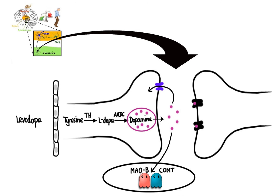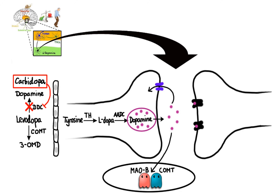One of the biggest problems levodopa faces on its own is peripheral metabolism. There are two major enzymes in the periphery that cause breakdown of levodopa before it can reach the brain: peripheral dopa-decarboxylase, which converts levodopa to dopamine, and catechol-O-methyltransferase (COMT), which converts levodopa to 3-O-methyldopa. Because of this, levodopa must be administered with carbidopa, which inhibits dopa-decarboxylase and reduces peripheral metabolism of levodopa. Entacapone, which inhibits peripheral COMT, is also used in combination to prolong the availability of levodopa to the brain.